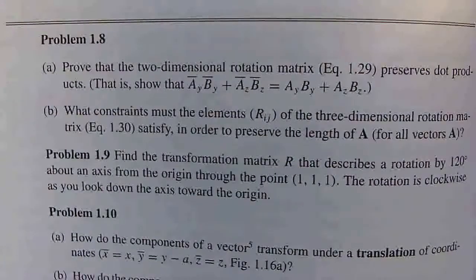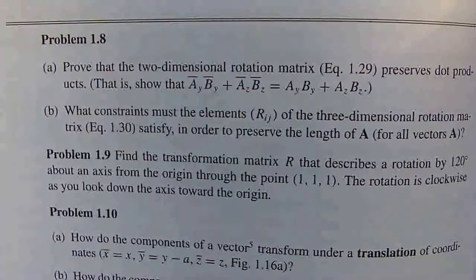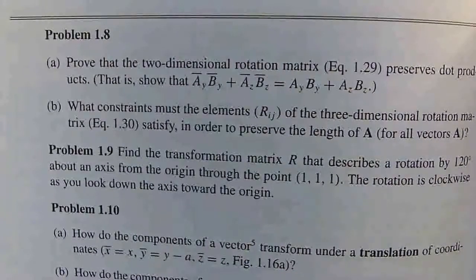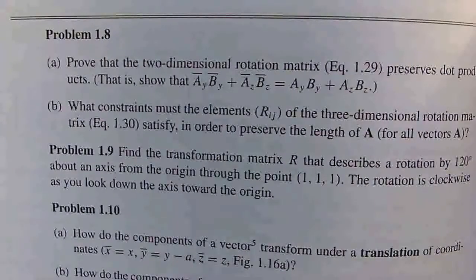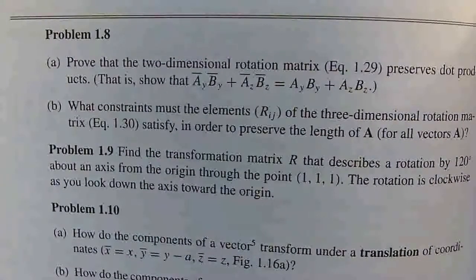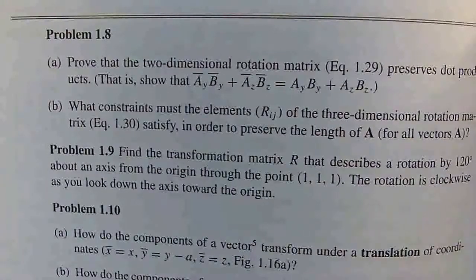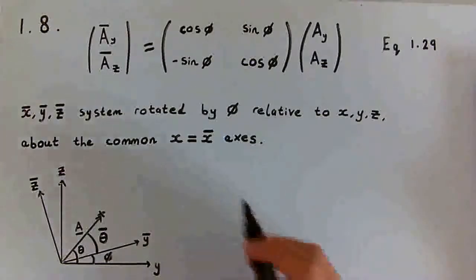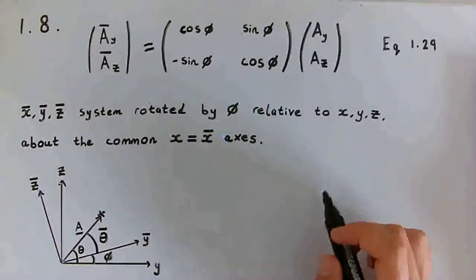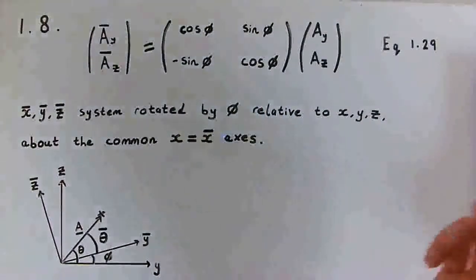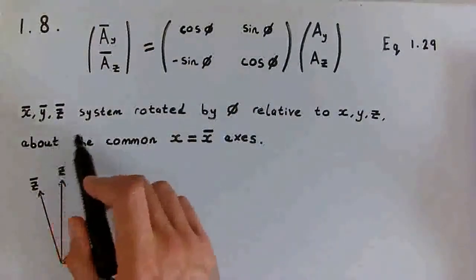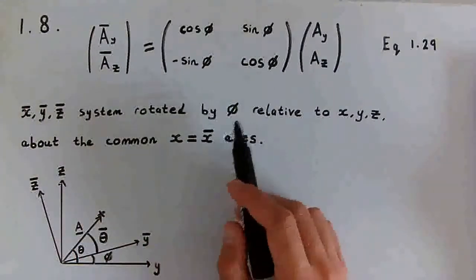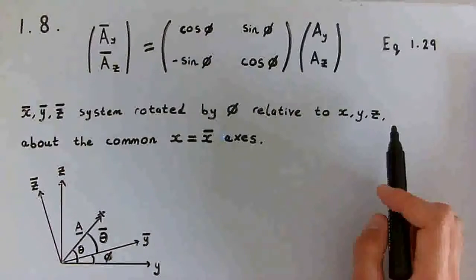Hello everyone, welcome back to the channel. Today we'll be solving problem 1.8 from Griffith's Introduction to Electrodynamics. Part a asks us to prove that the two-dimensional rotation matrix in equation 1.29 preserves dot products. I've rewritten equation 1.29 at the top as a matrix formulation based on the x-bar, y-bar, and z-bar system that's been rotated by the angle phi relative to the xyz system.